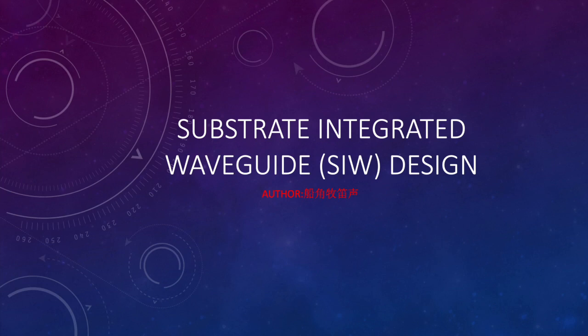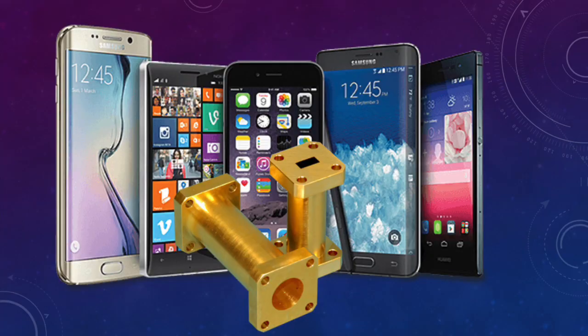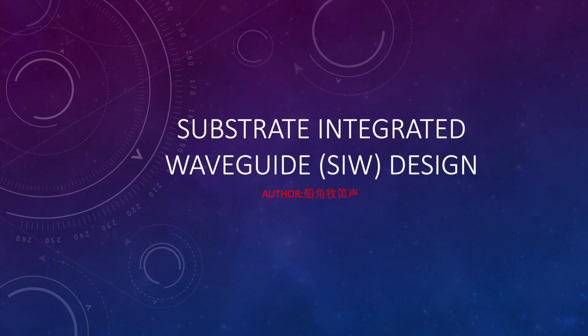We know that the metal waveguide is really bulky, even though it has a lot of advantages and has been developed over 100 years. But we still need to develop some planar transmission lines. You can imagine it's hard to put a metal waveguide inside your cell phone. In around 2000, some scholars developed this SIW. SIW is a relatively simple idea where we put a lot of vias into parallel rows. The substrate works as a kind of waveguide.